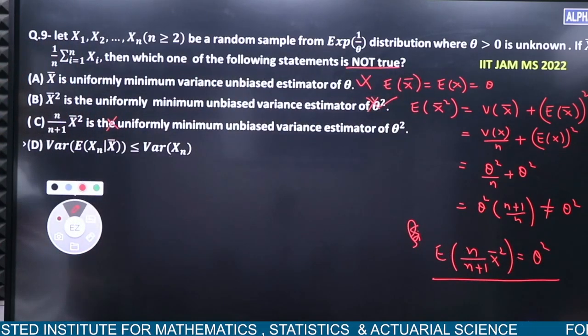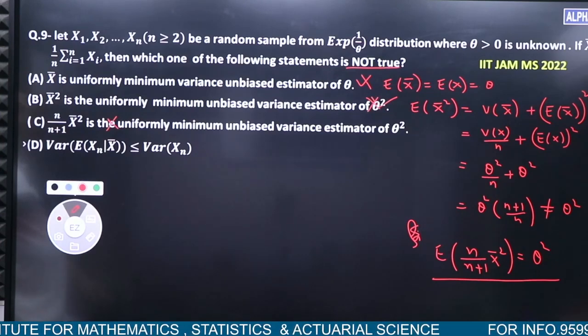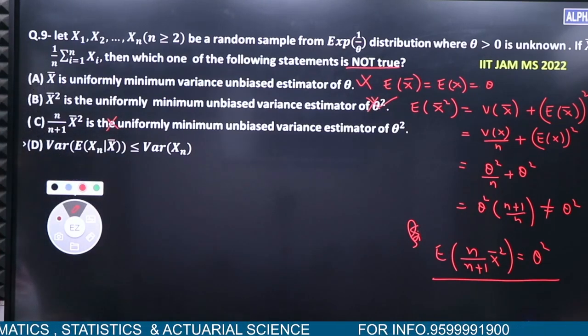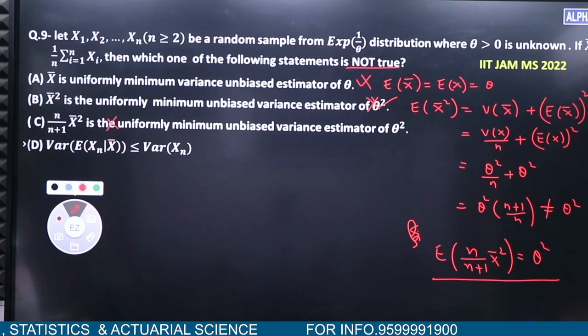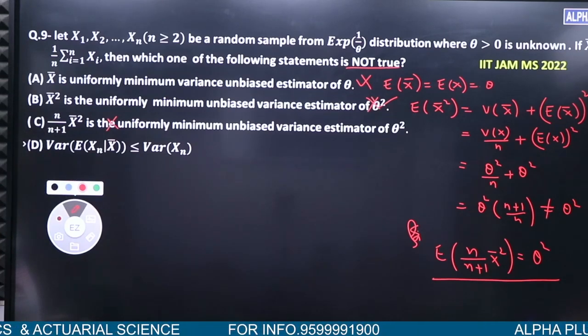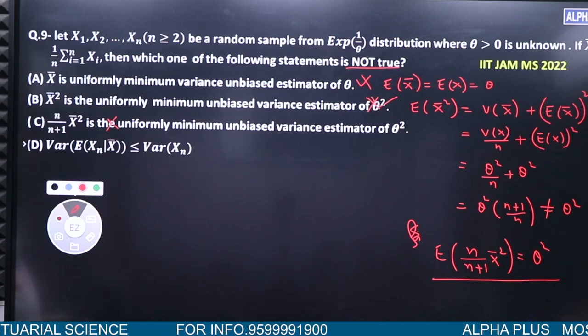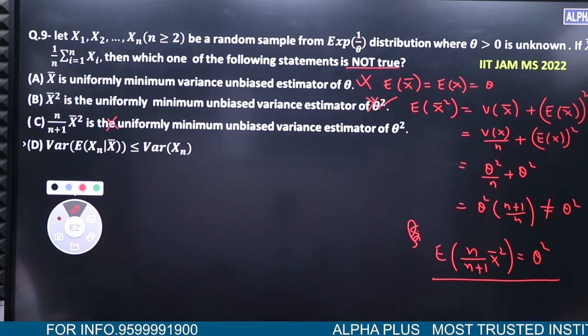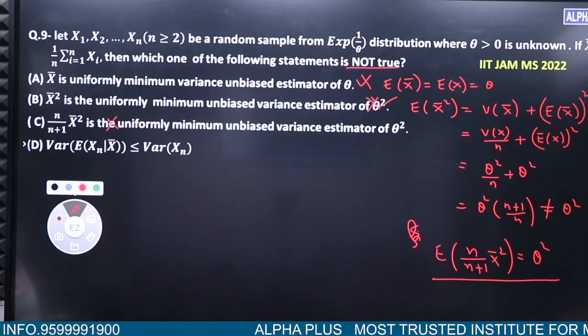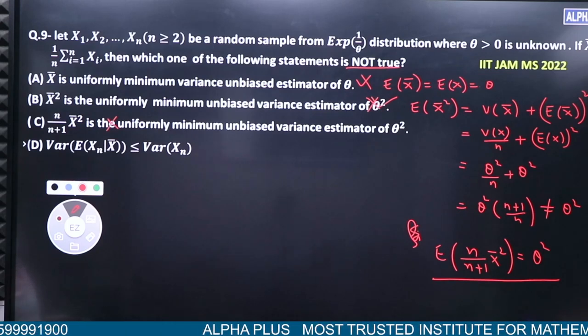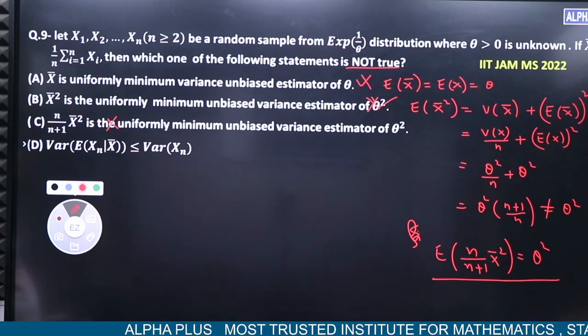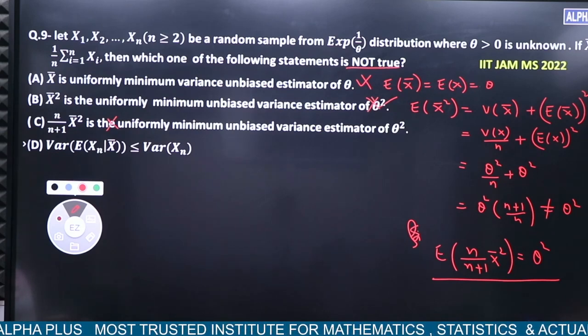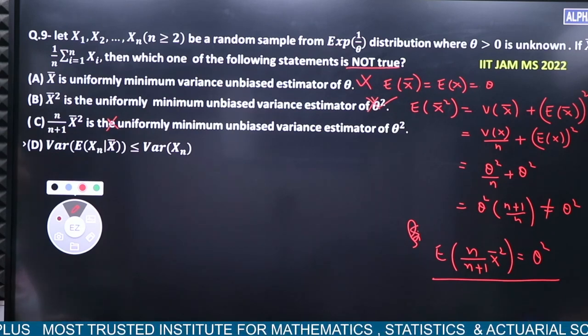Now using Jensen's inequality, variance of expectation of X given X bar is less than variance of X. What is variance of X? Variance of X is theta square. Expectation of X is theta. Variance of theta constant is zero, so this is also true. For part D, variance of X is theta square which is greater than equal to zero, yes it is true. We were looking for not true statement.